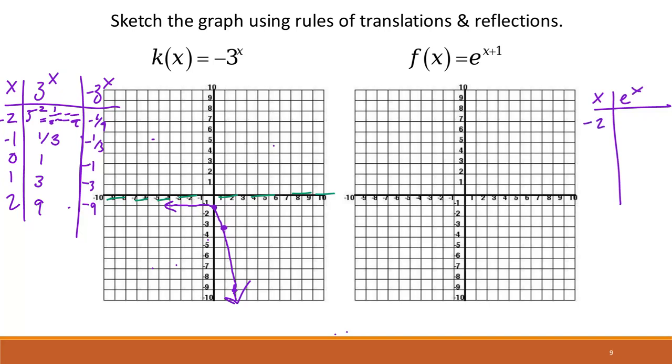So if we have negative 2, negative 1, 0, 1, and 2, and we use e of x as our function here, we're going to have, let's see.